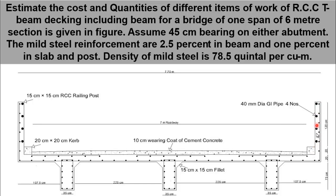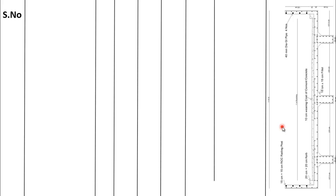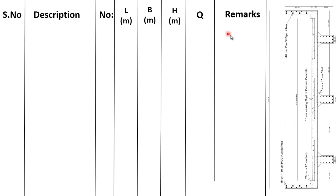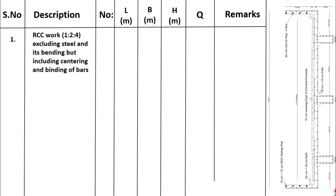We have calculated the quantities of each item of work in tabular form. In this table, the first column represents serial number, second column description of item, third column number, fourth column length, fifth column breadth or width, sixth column height or depth, seventh column quantity, and eighth column remarks. In the remarks column, we generally put some hidden details or formula for the given item of work. The first item of work to calculate is RCC work in which 1:2:4 concrete is used, excluding steel and its binding but including centering and binding bars. Steel quantity and its binding is calculated in a separate item of work.